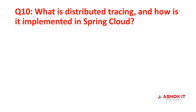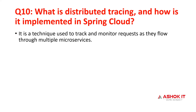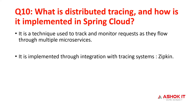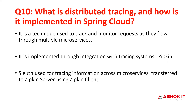Question 10: what is distributed tracing and how is it implemented in Spring Cloud? When multiple microservices are executed for a request, distributed tracing is a technique to track and monitor the request flow through those microservices — what path they took, how many executed, in what order, and how much time was taken. It is implemented using Zipkin server and Zipkin client. Sleuth collects all microservice execution paths and sends them to the Zipkin server via the Zipkin client.